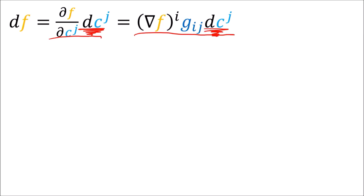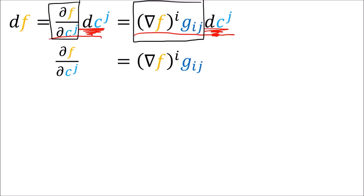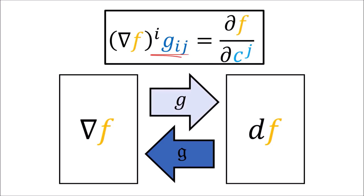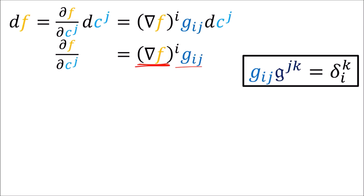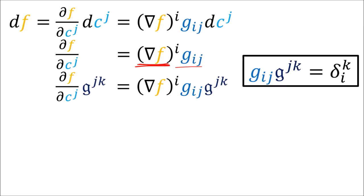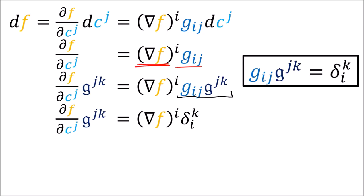This gives us an equation between the components with partial derivatives on the left hand side and a summation over the components of del f and the metric tensor components on the right. We have confirmed that the metric tensor components help us change between the components of the vector field del f and the components of the covector field df, which are these partial derivatives. To isolate the components of del f on one side we need to get rid of these metric tensor components. Using the definition of the inverse metric tensor components and the resulting Kronecker delta, if we do summations on both sides using the inverse metric tensor components we can change this term into the Kronecker delta δ_{ik}, and by the Kronecker delta index cancellation rule we cancel out the i indexes and write it as k.